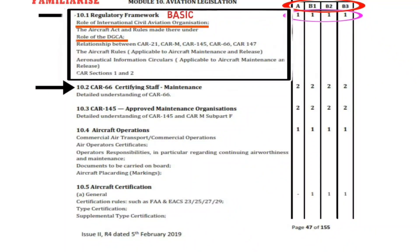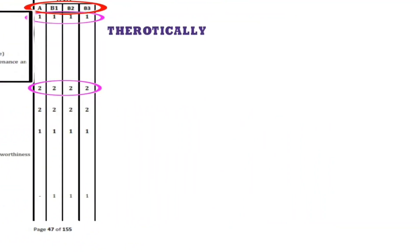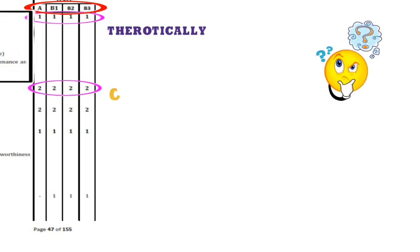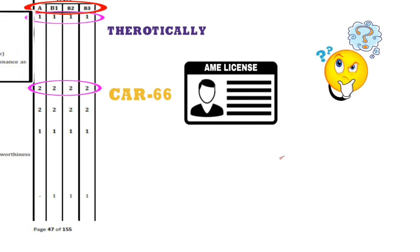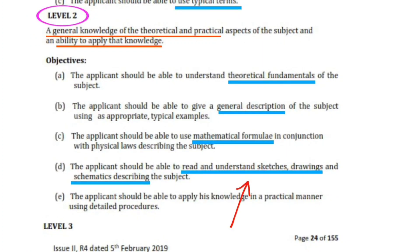For example, CR66 has a knowledge requirement of Level 2. This means you need to be thoroughly familiar with CR66 theoretically, but also understand its practical use — for instance, knowing what actions could lead to your license being cancelled. For sketches, drawings, and schematics, Module 15 is the best example.